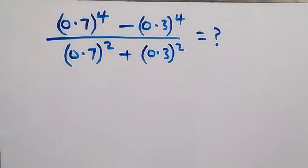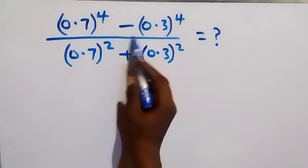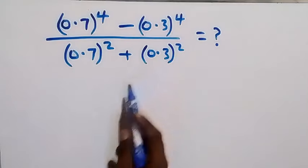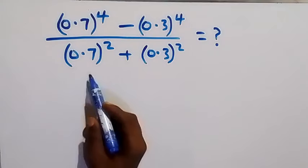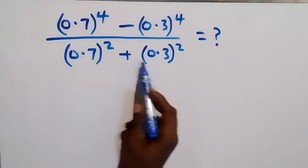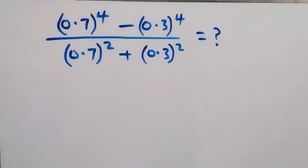Hello, you are welcome. How to solve this nice exponent problem. We are given 0.7 raised to power 4 minus 0.3 raised to power 4, divided by 0.7 raised to power 2 plus 0.3 raised to power 2.